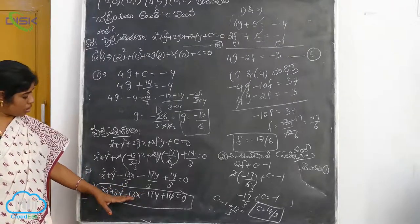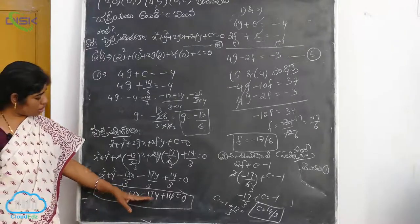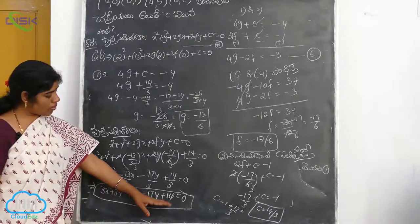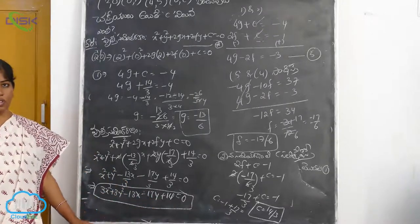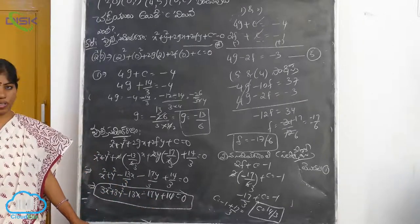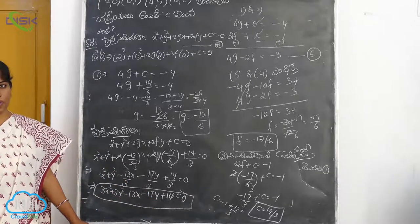Multiplying through by 3, the final equation is: 3x² plus 3y² minus 13x minus 17y plus 14 is equal to 0.